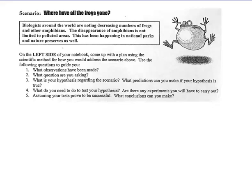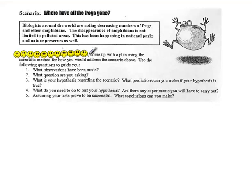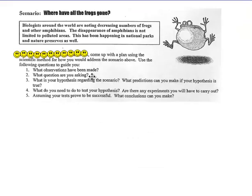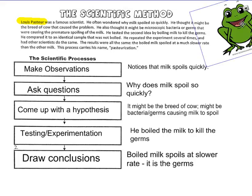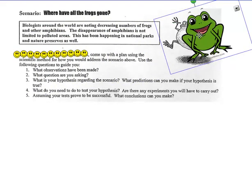Or, it doesn't have to be the left side of your notebook. I'm going to cross that out by putting a lot of smiley faces. Come up with a plan using the scientific method for how you would address the situation. You have a choice. You can either answer these questions or you can just make a little table and go through these boxes just like this. They're addressing the same thing, actually. So, go ahead and take a look at that. And I prefer this frog over this one. Have a nice day.